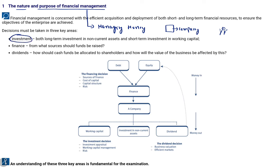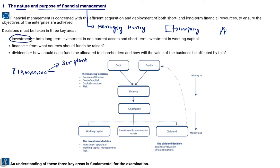The first is investment. If we have 10 crore rupees in funds, we decide how to utilize them — for example, 3 crore for a plant, 2 crore for a building, 4 crore for stock, and 1 crore kept as cash for working capital or day-to-day expenses. Planning where to invest the funds is the job of a financial manager. Investment planning means deciding where we want to invest the funds we have.